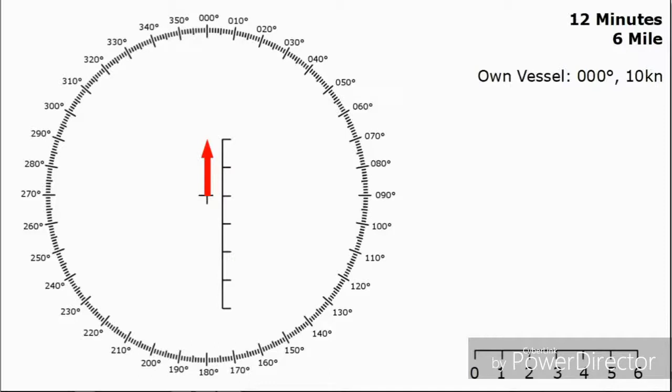We can put our own true vector on which is going to start in the center and be pointing at 000 and the length of that is going to be two miles which is how far we would have traveled in 12 minutes.